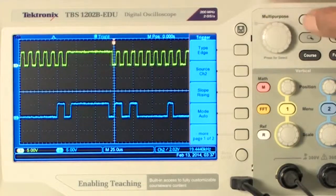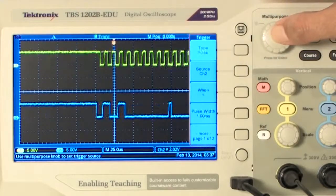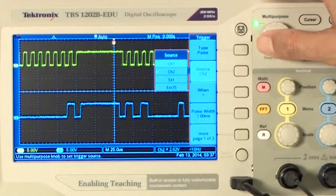To trigger on a packet, we'll use pulse width triggering to capture whenever the clock is idle for more than 100 microseconds, as it is at the beginning of most of the packets.